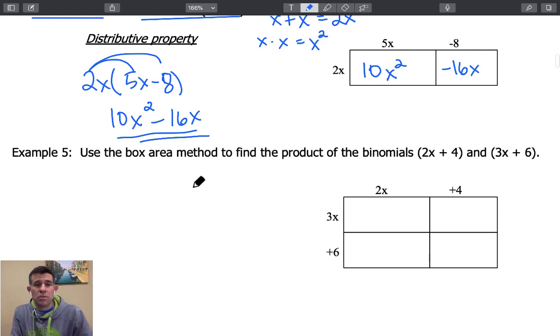Example 5 says use the box area method to find the product of the binomials 2x plus 4 and 3x plus 6. So again, we're going to write out the geometric representation here by creating this rectangle. Our dimensions 2x plus 4 and 3x plus 6. Now we are going to multiply and find the area of each one of these individual rectangles.